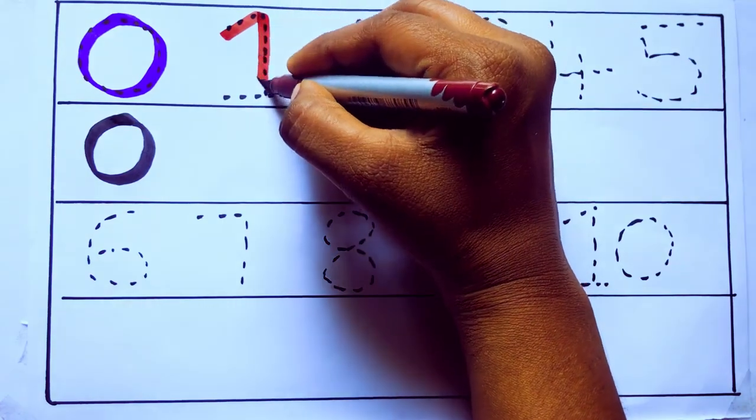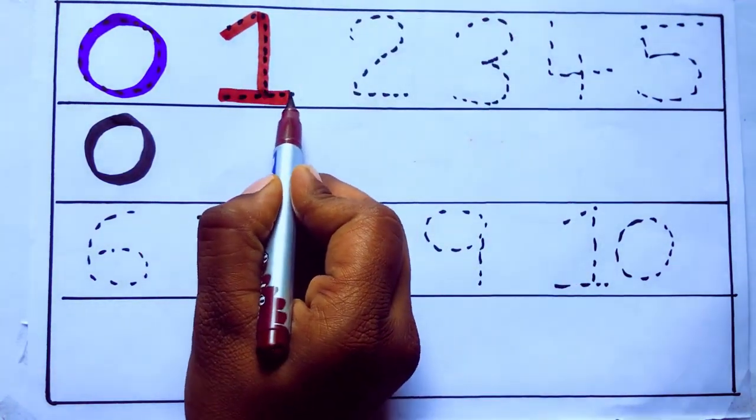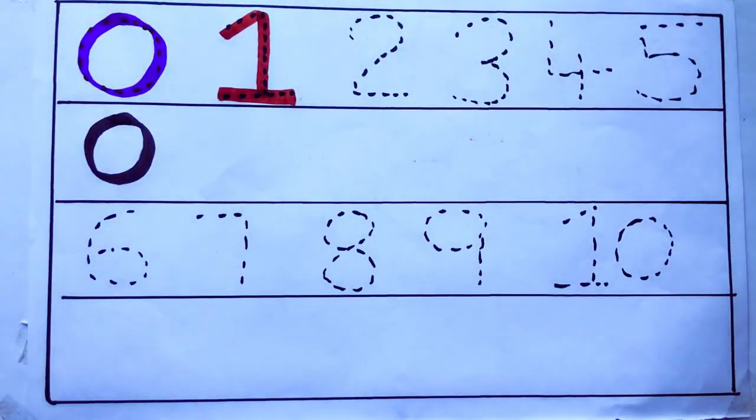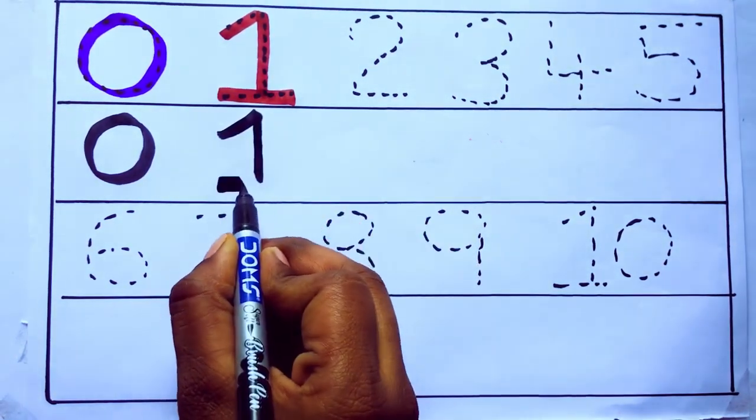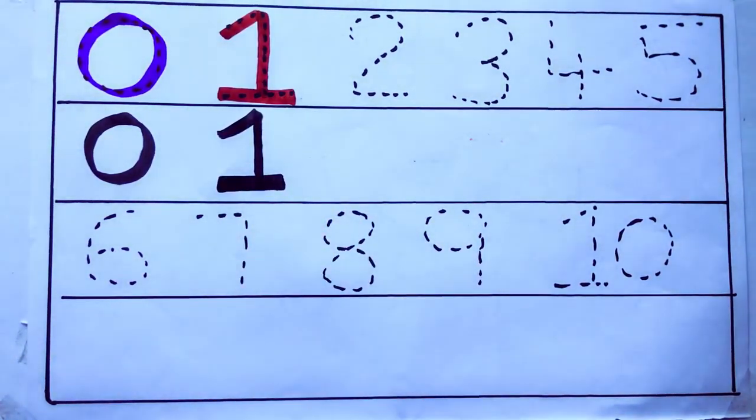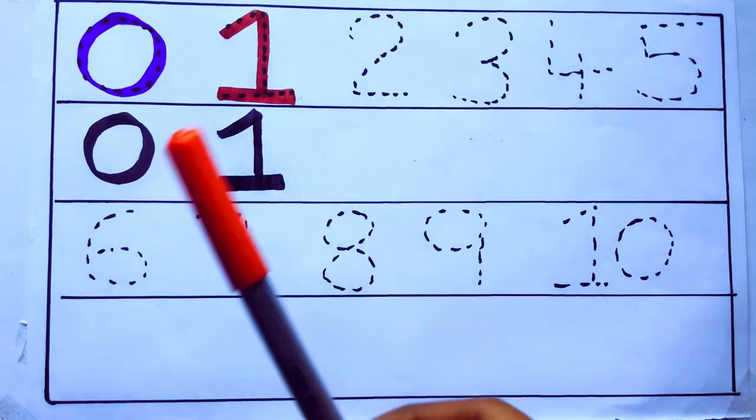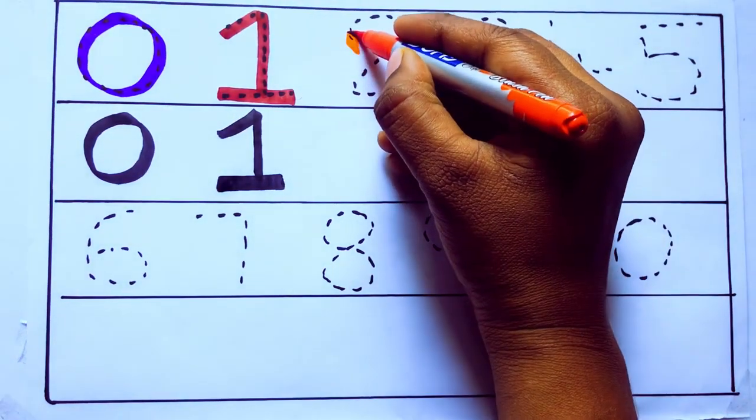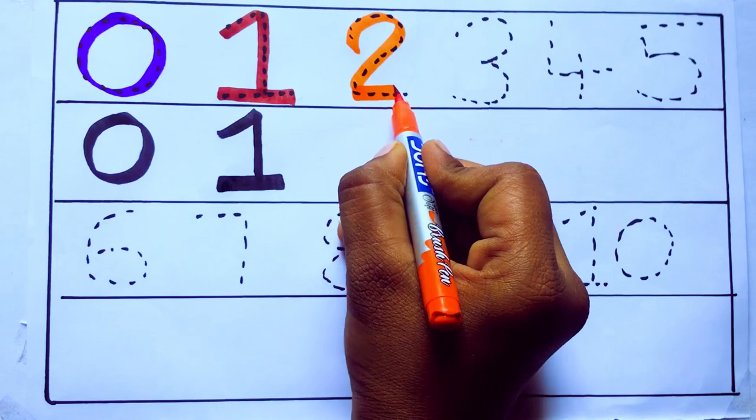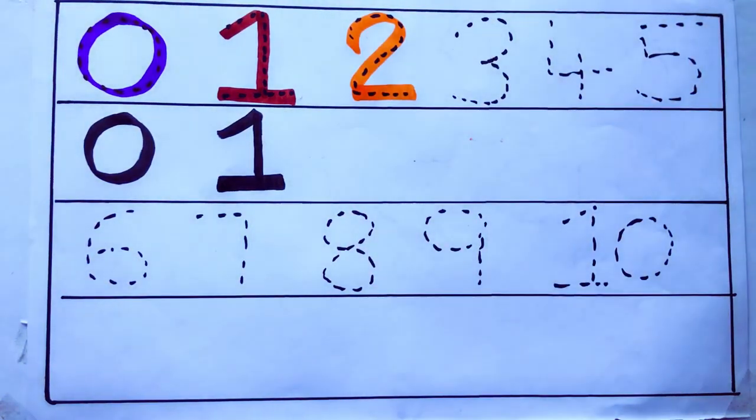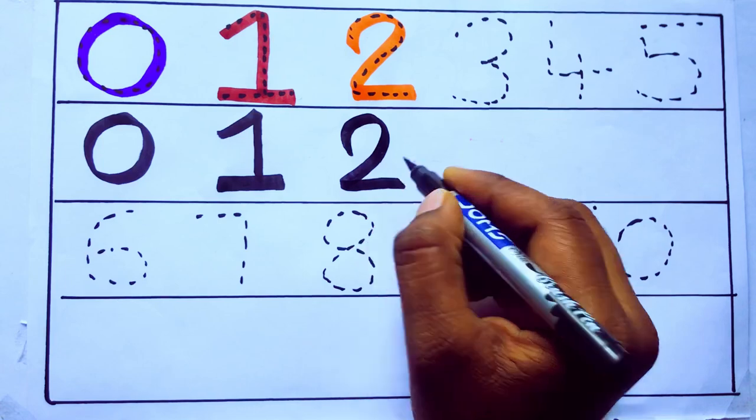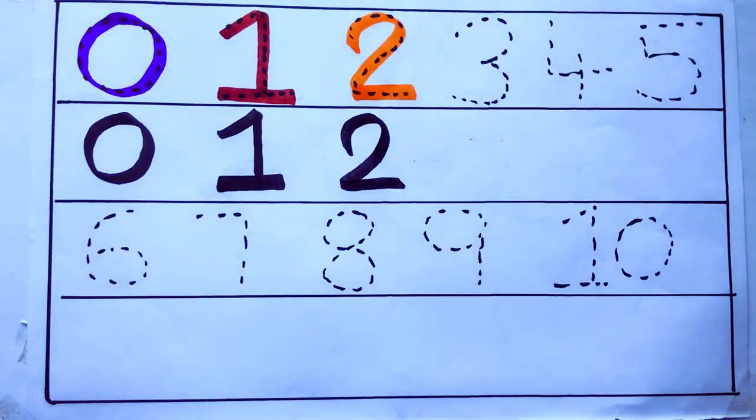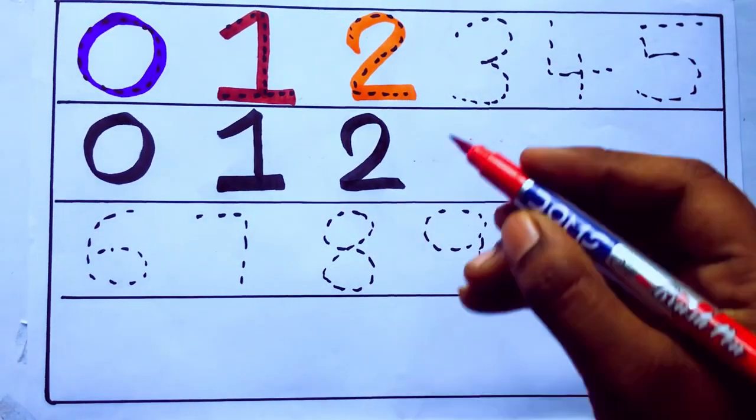1, O-N-E, 1, number 1. Orange color, 2, T-W-O, 2, number 2. Red color.